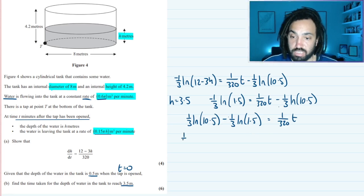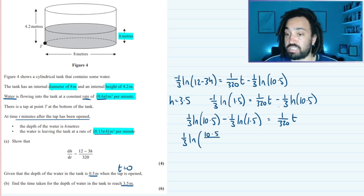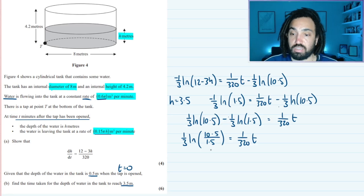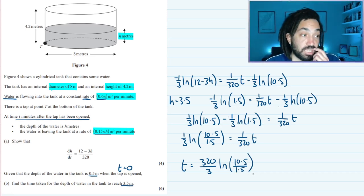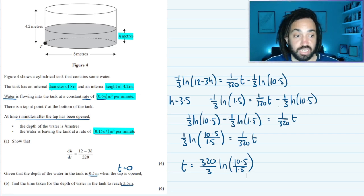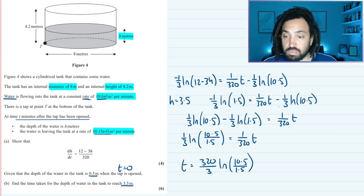We could even collect the lns. They're both times by a third. So we can do 10.5 on top because that's the positive ln. And this is the negative. So we divide by 1.5. And that's equal to 1/320 t. So t equals 320/3 ln(10.5/1.5). Perfect. But we need to calculate that because it has asked us the question. So we need to give it an actual value rather than exact form.